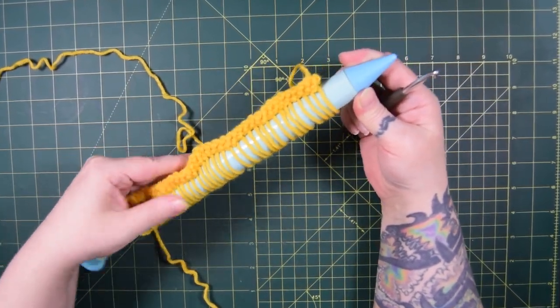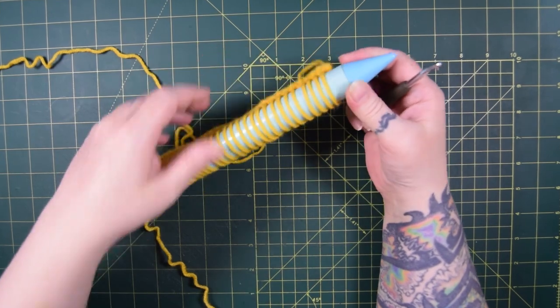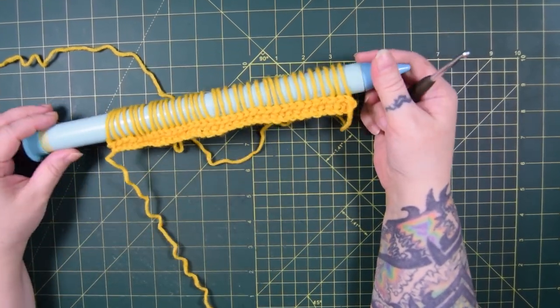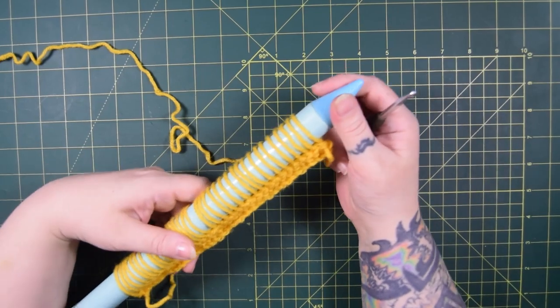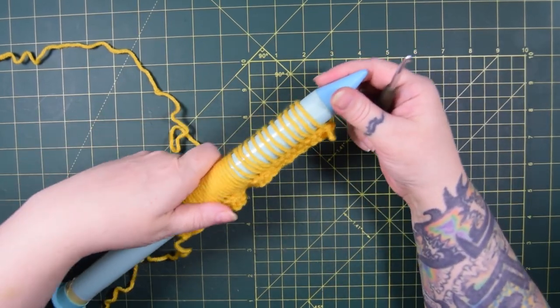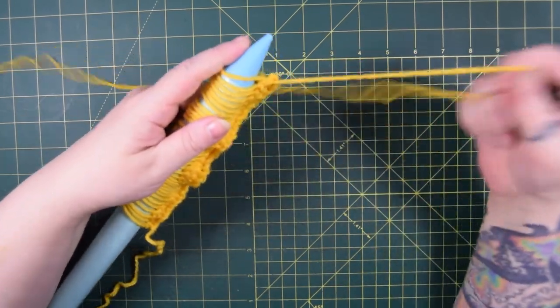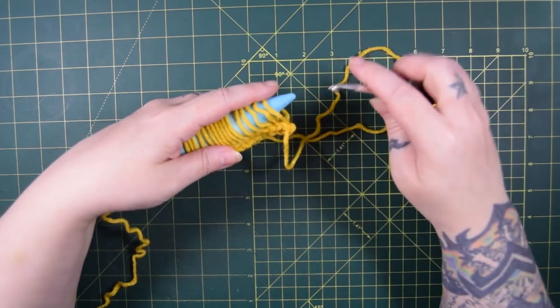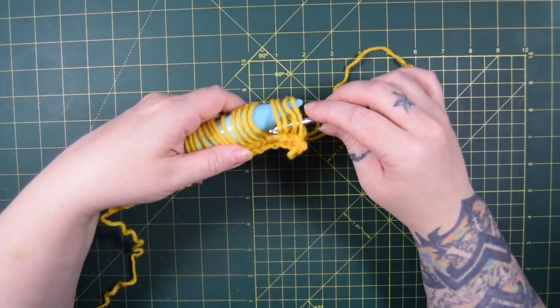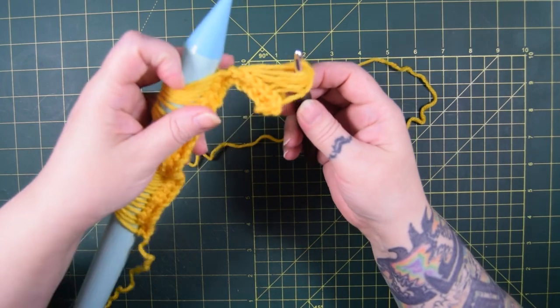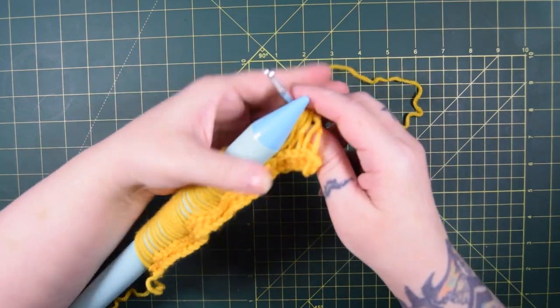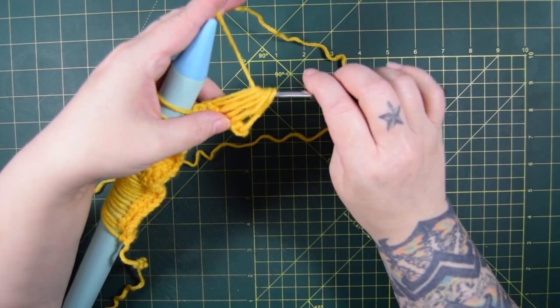And the next row is where the magic happens. This row is where we make the swirls. Some people like to slide all the loops off the needle at once, and then work them up. I find I get them all twisted that way, so I like to just slide off the 5 loops that I'm working with, and then push the rest of the loops down the needle a bit until I'm ready for them.